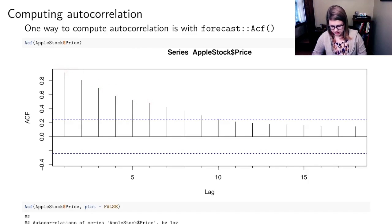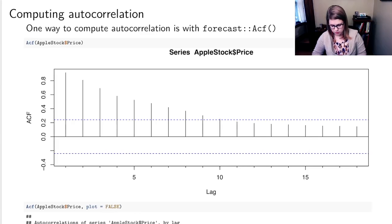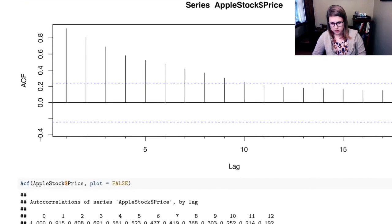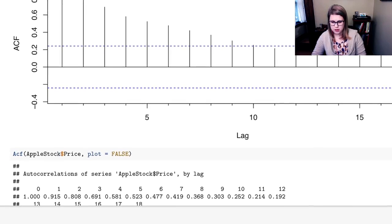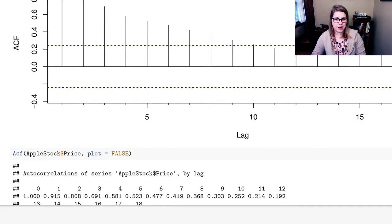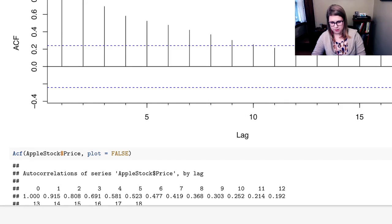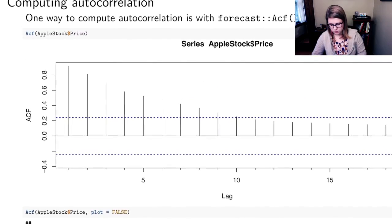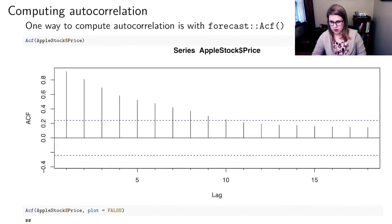You can also tell ACF that you don't want the plot, you just want to look at the numbers. So zero lag, you get an autocorrelation of one. Anything correlated with itself is one. Lag of one point nine five, lag of two point eight, et cetera. So you can get R to just give you those numbers if you want.